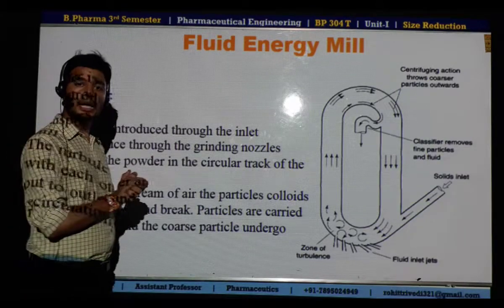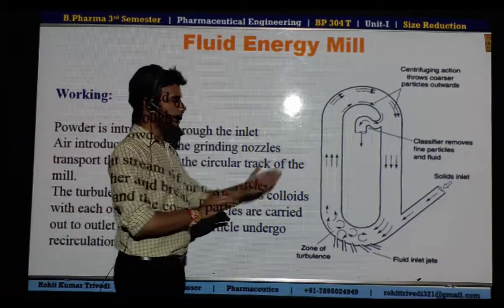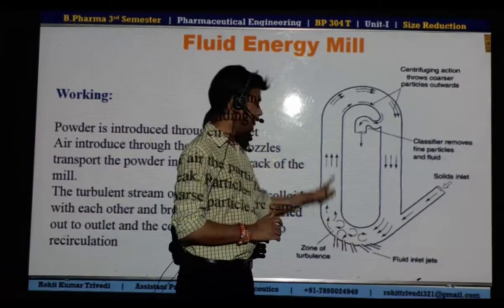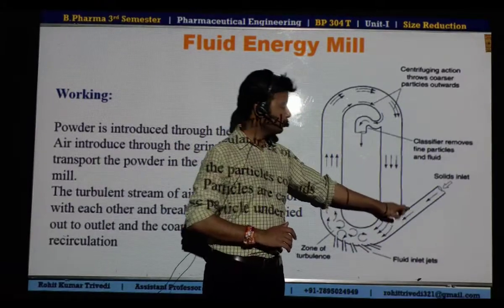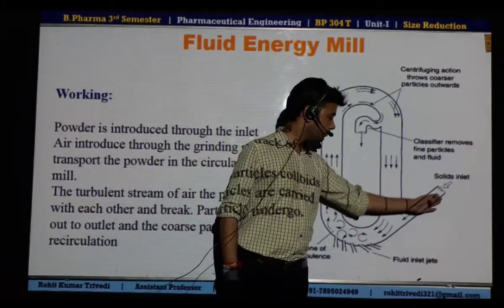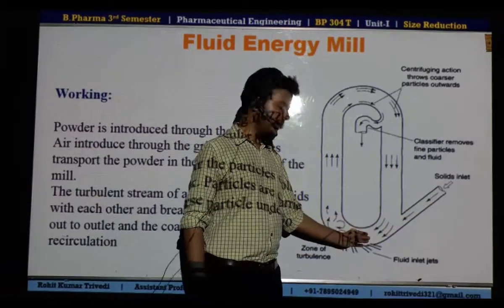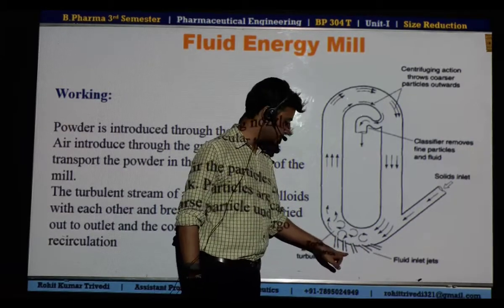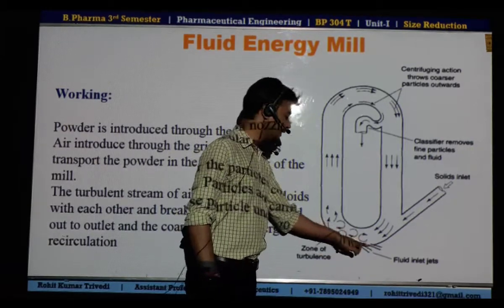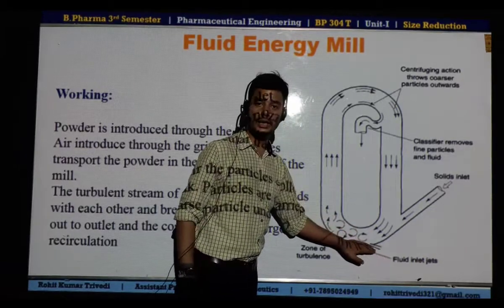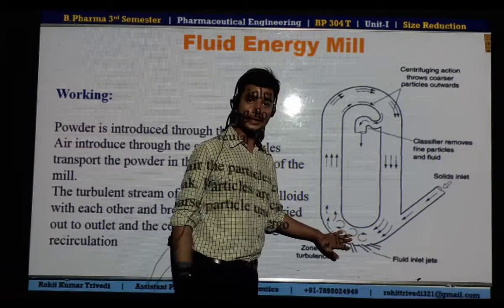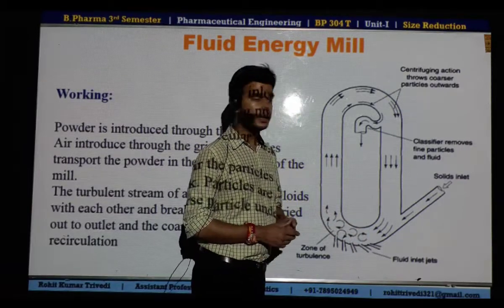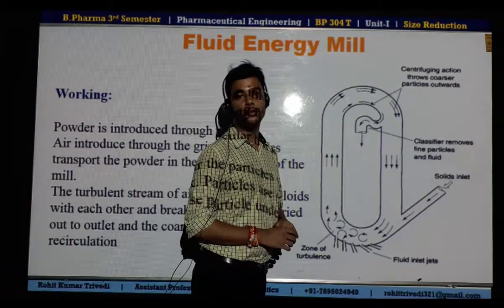In a fluid energy mill, there is a very simple structure — a tube-like open tube structure. There is an inlet through which solid material enters inside the mill. At the very bottom of the machine, there are openings for high-speed air, or compressed air, which is responsible for the size reduction and separation inside the fluid energy mill.